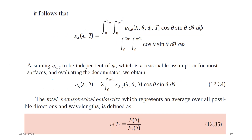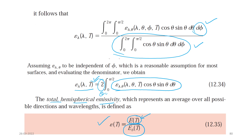Simplifying the integration: integrating over phi gives 2π, and integrating the remaining part yields an overall constant of 2. The remaining integral over theta from 0 to π/2 gives the value of ε_λ. For total hemispherical emissivity ε — independent of both direction and wavelength — it equals e(T), the emissive power of the real surface, divided by e_b(T), the black body emissive power. This is the overall emissivity of a real surface.